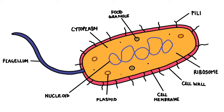Surrounding the cytoplasm is a cell membrane which controls which substances enter or exit the cell. Outside the cell membrane is a strong cell wall. On the outside of the cell are hair-like structures called pili, which are used for attachment purposes, and finally there are a small number of larger structures called flagella, which are used for the movement of the cell.